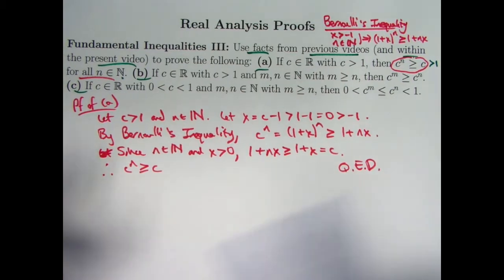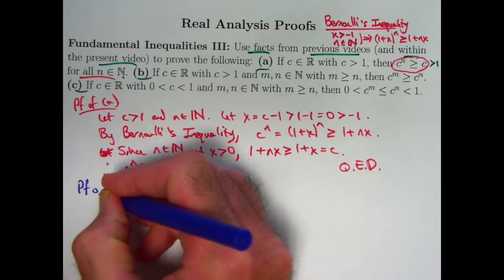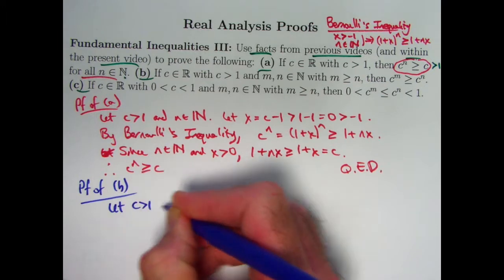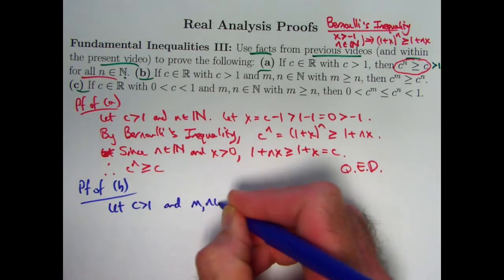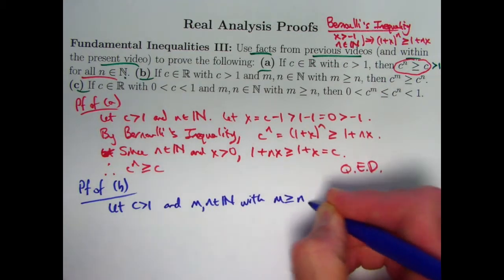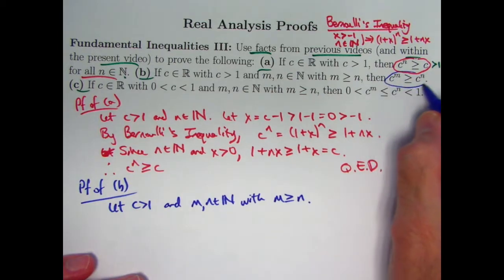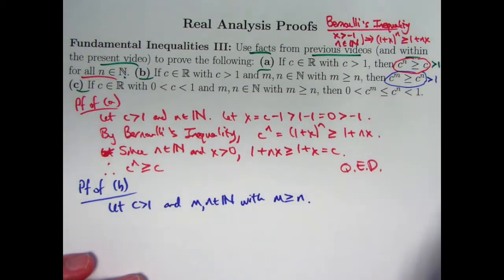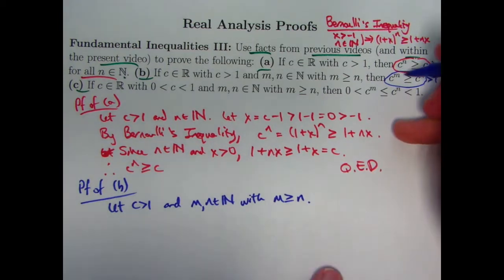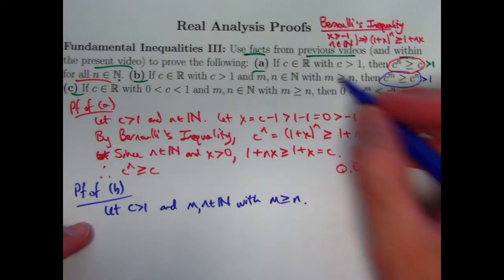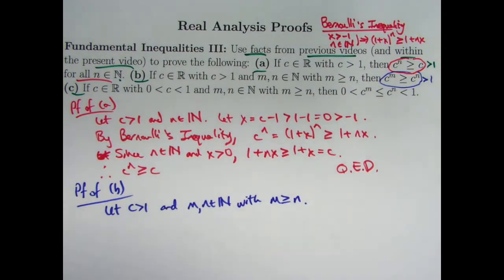All right, so now we're on to proof of part B. You've got, once again, a real number bigger than one. But now you've got two positive integers with m being greater than or equal to n. I'd like to prove this fact is true. And once again, by the fact that c is bigger than one, these terms, it turns out, would also be both bigger than one. When you raise c, a number bigger than one, to a higher power, you get something greater than raising it to a lower power. In fact, this would be a strict inequality if m were strictly greater than n.